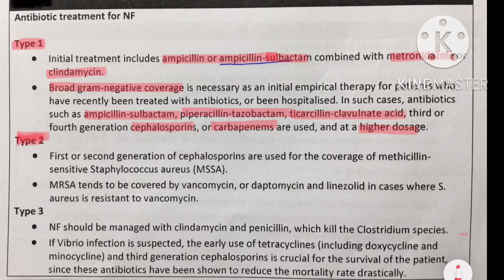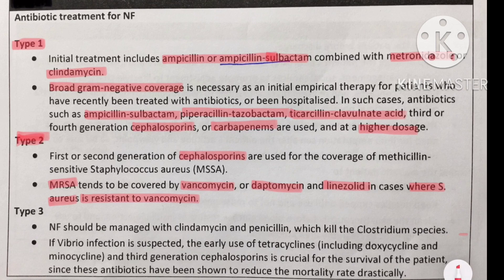For type 2 necrotizing fasciitis, second-generation cephalosporins are used for coverage of methicillin-sensitive Staphylococcus aureus. For methicillin-resistant Staphylococcus, coverage is provided by vancomycin, daptomycin, or linezolid. If the bacteria is resistant to vancomycin, linezolid is the preferred option.